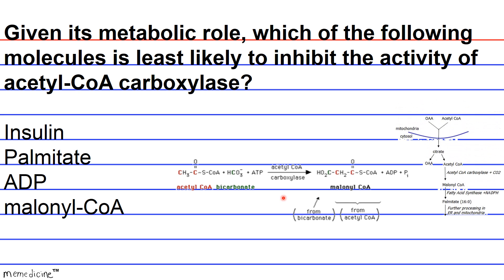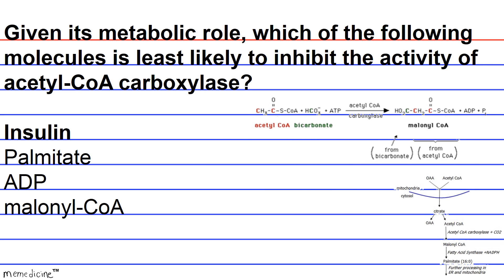So basically, the formation of fatty acids, where acetyl-CoA carboxylase plays a role, is an anabolic process. And insulin is least likely to be an inhibitor of acetyl-CoA carboxylase. Because if it's going to upregulate the process, it's definitely not inhibiting—it's enhancing, rather.